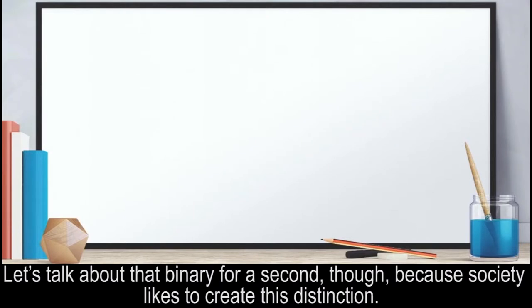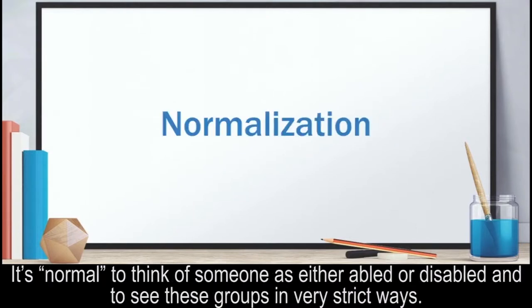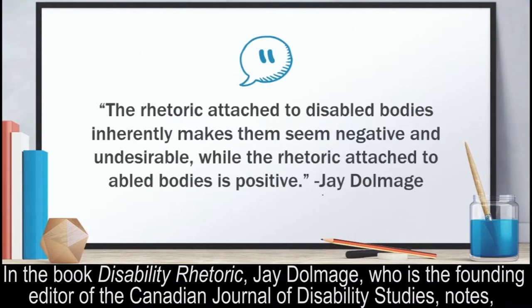But let's talk about that binary for a second, because society likes to create this distinction. It's normal to think of someone as either abled or disabled, and to see these groups in very strict ways. In the book Disability Rhetoric, J. Domage, who is the founding editor of the Canadian Journal of Disability Studies, notes...